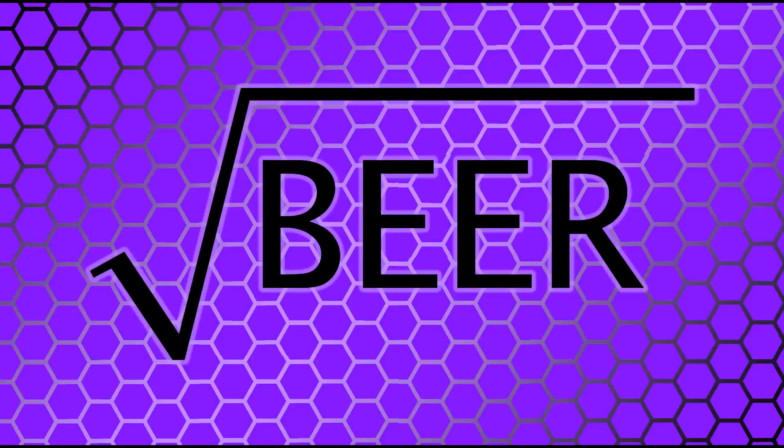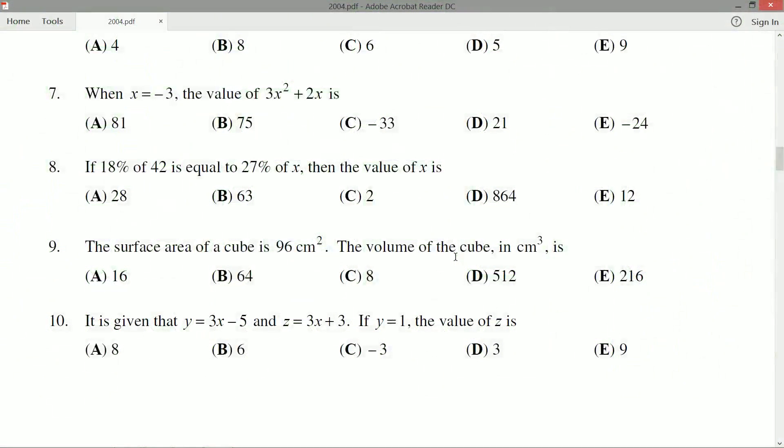Hello and welcome everybody, we're looking at question 8 on the 2004 Pascal paper. If 18% of 42 is equal to 27% of x, then the value of x is: 28, 63, 2, 864, or 12 are our options.